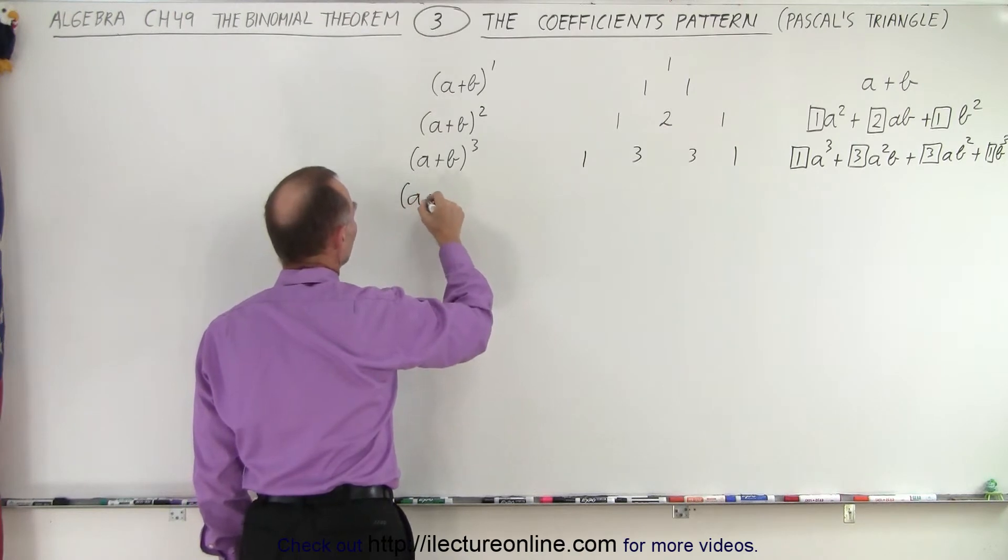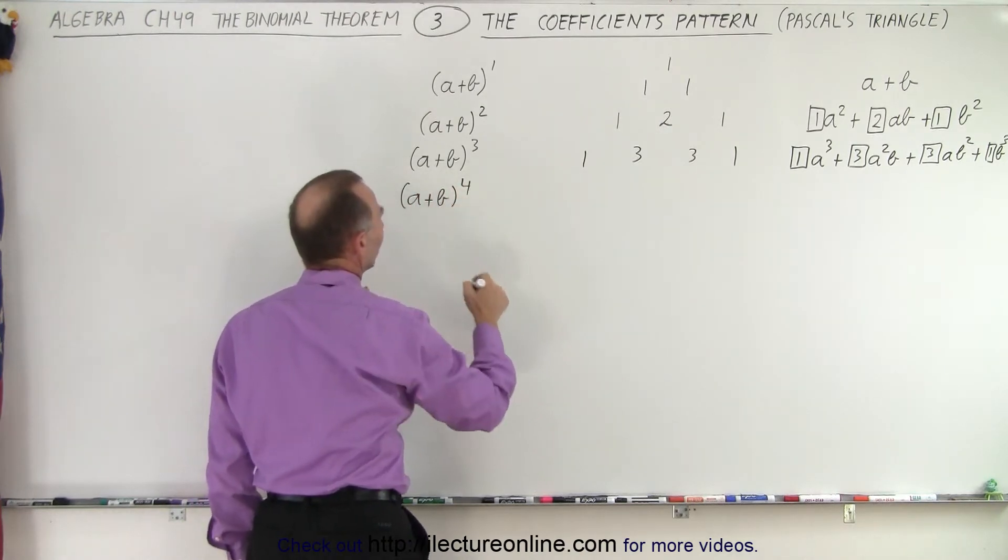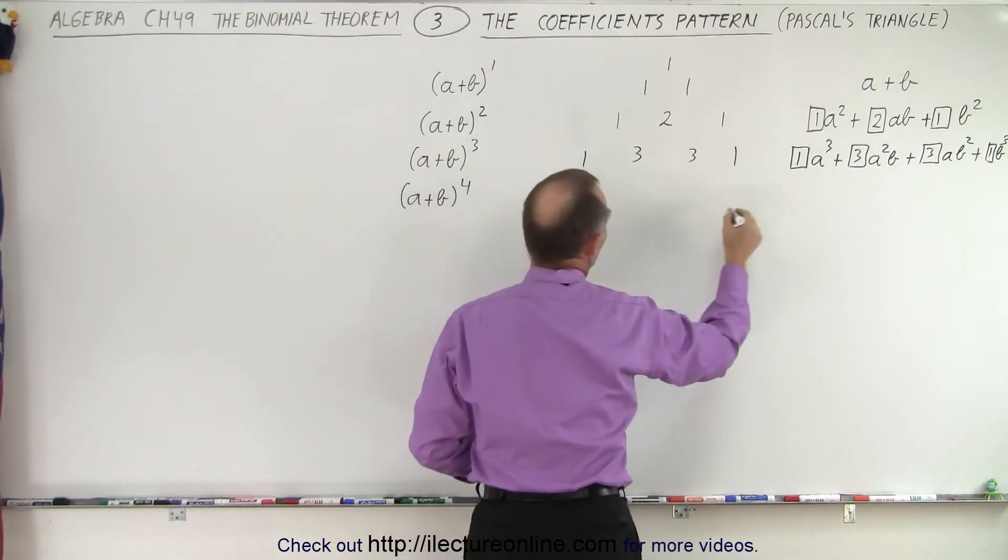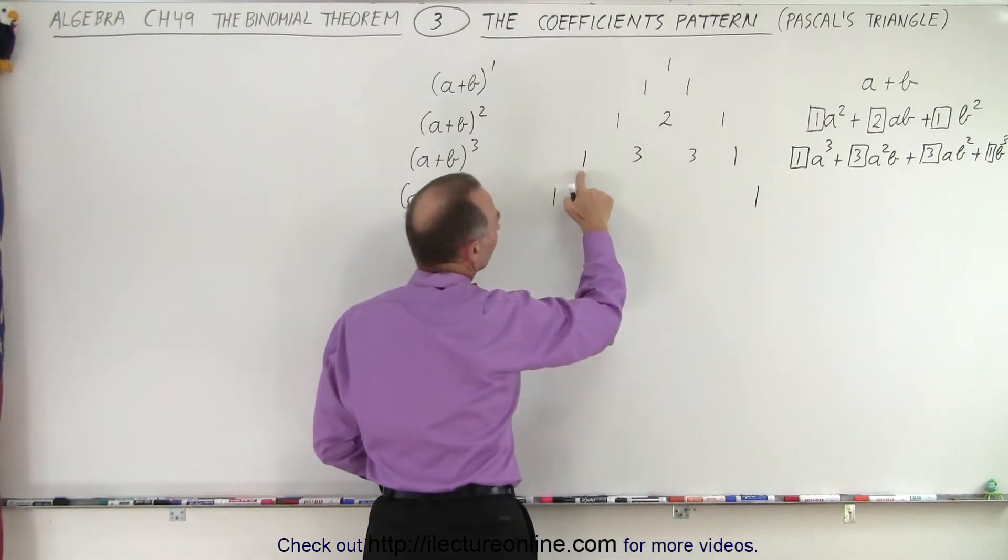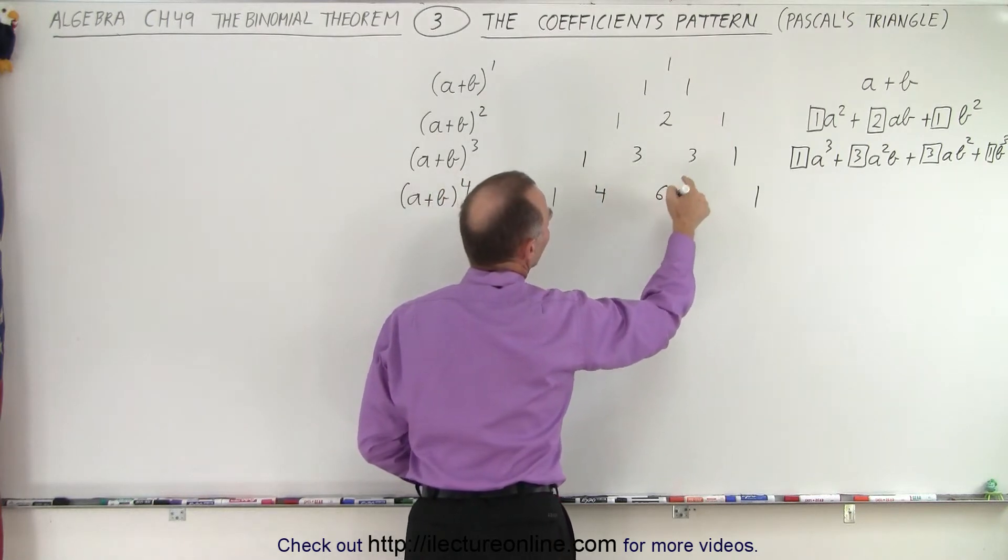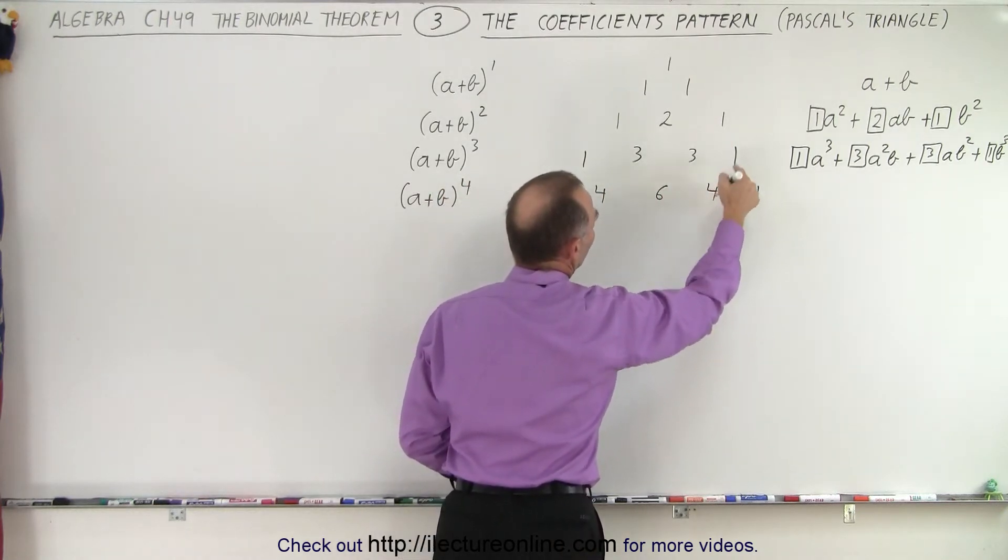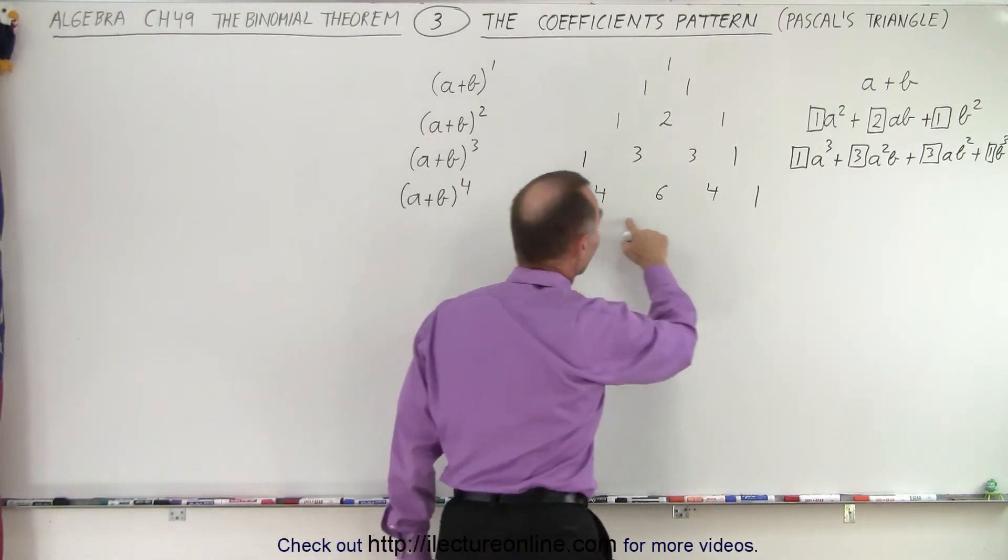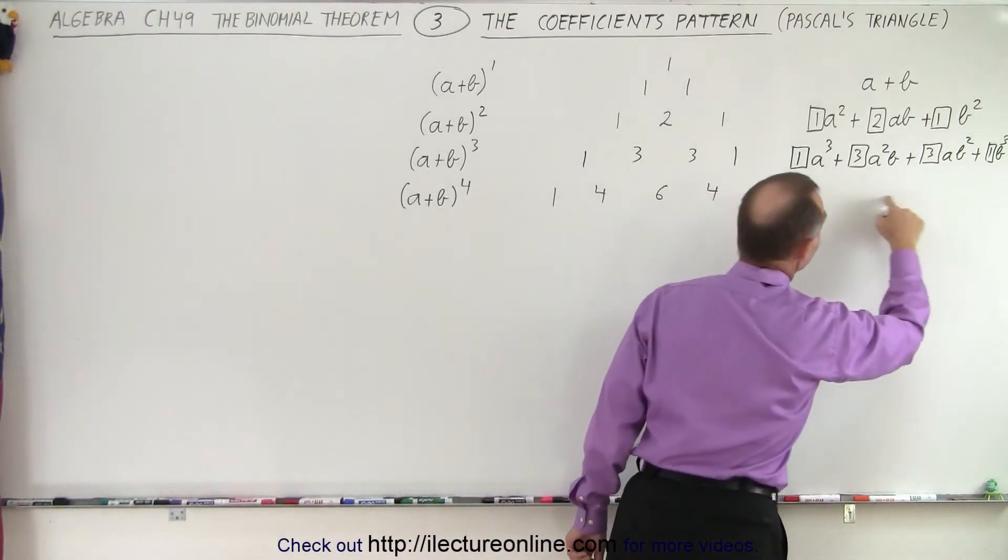We then take a plus b to the fourth power, and the coefficients become, again, what we do with the ones is we move them out. We put the 1 there. We put the 1 there. Then we take 1 plus 3. That gives us a 4. 3 plus 3. That gives us a 6. 3 plus 1. That gives us a 4. And then the ones move out to there. And so those would then be the five numerical coefficients of our next expansion.